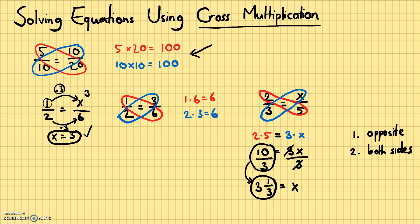So x equals 3 and one third is our answer — that's what x must be for the equality to hold. You can see why we couldn't do this intuitively like the previous equation, because x is not a whole number. Let's try another example: 4 ninths equals 7 over x. Again, there's no whole number you can multiply 4 by to get 7.